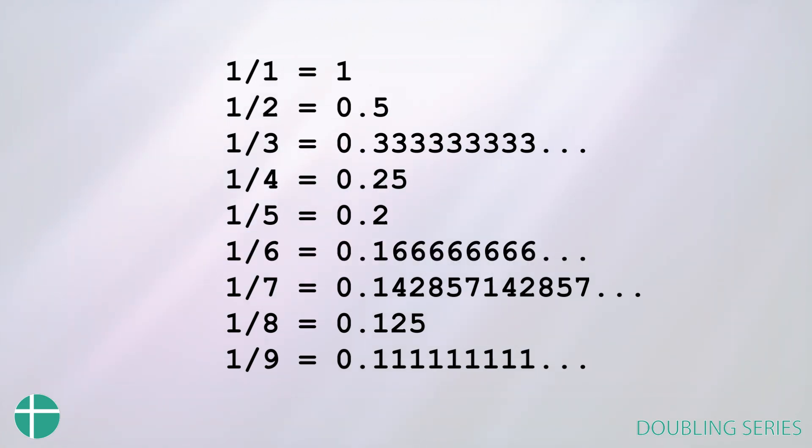But one of the most important series out of all of this is 1 over 7. 1 divided by 7 gives us very interesting series, our doubling series, but not quite the same: 1, 4, 2, 8, 5, 7. A slightly different pattern than the one that we get when we just double one.